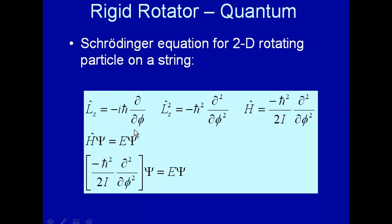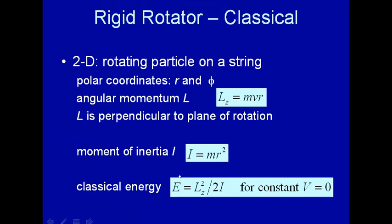What we found from the classical point of view is that the energy is Lz squared over 2I, so we now want to change this into an operator. This is the total energy. There was no potential involved, V equals zero, so the only energy is kinetic energy, the particle going around on a string, and therefore we have to change this into a quantum mechanical operator.